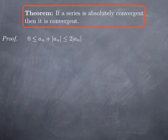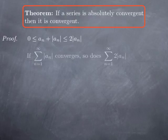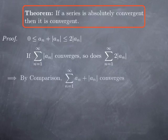This is because |a_n| is either equal to a_n when a_n is positive — in that case a_n + |a_n| = 2a_n = 2|a_n| — or if a_n is negative then |a_n| = -a_n and a_n + |a_n| = 0. So we always have equality with one of the sides. If Σa_n is absolutely convergent, then Σ|a_n| converges and therefore so does Σ2|a_n|, and by comparison the series whose general term is a_n + |a_n| converges.